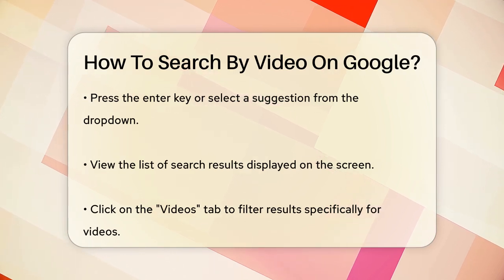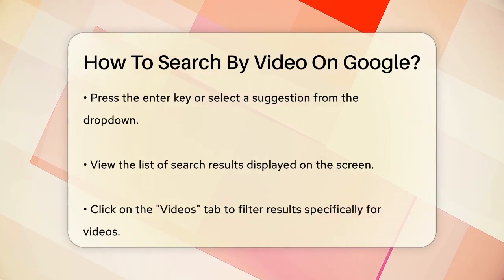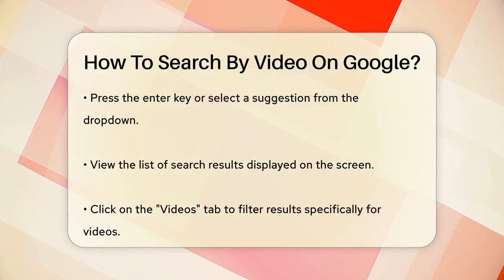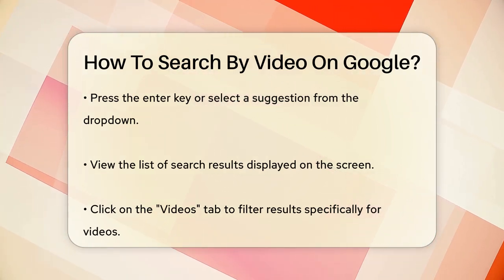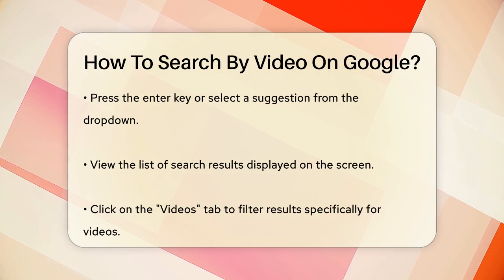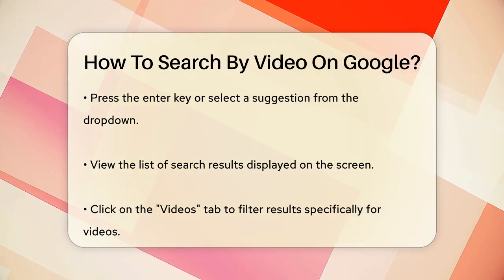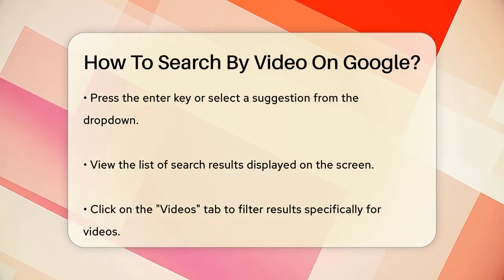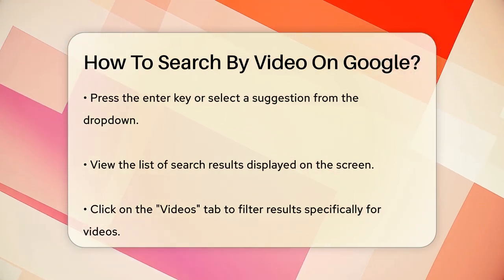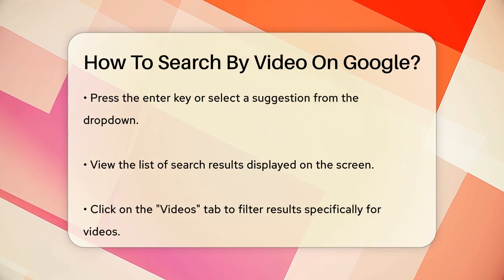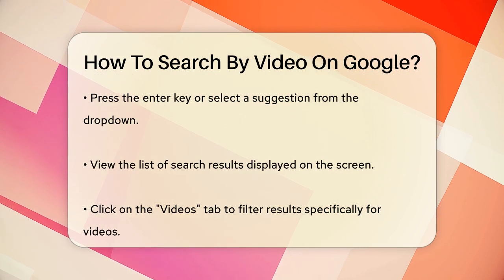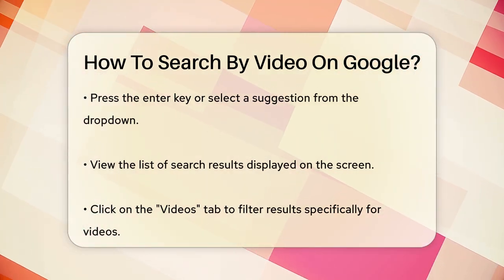Once you've typed in your search, hit the enter key or click on one of the suggestions that appear. Now you'll see a list of search results, but to narrow it down to videos, click on the Videos tab at the top of the screen.